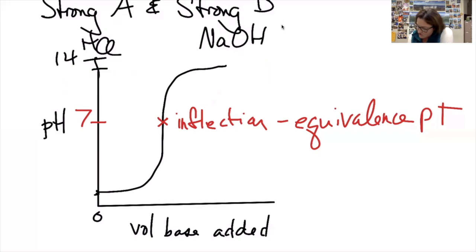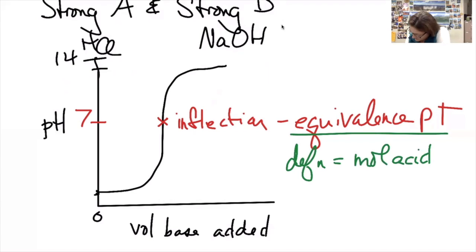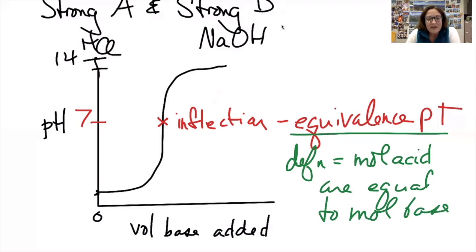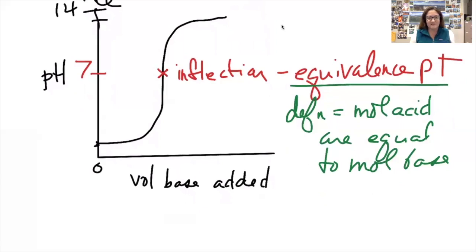The definition of equivalence point is when the moles of the acid are equal to the moles of the base. So if you know some information about the volume and concentration of one, you'll be able to find its moles, and then with its moles and the volume of the other one, you'll be able to find the concentration of an unknown.